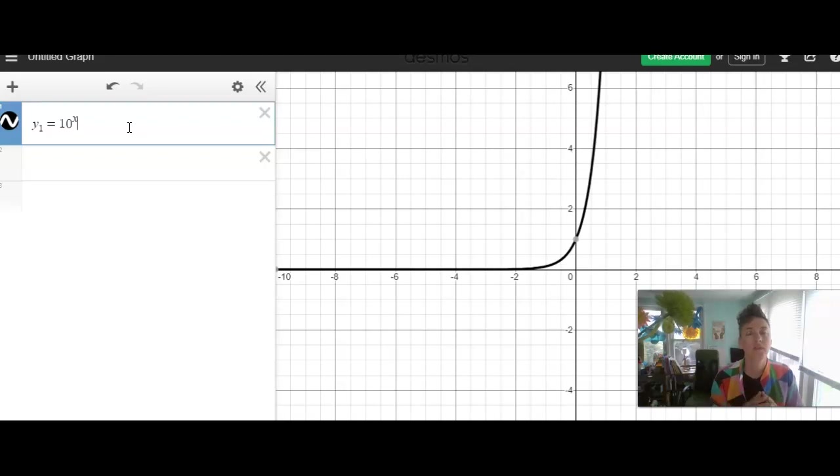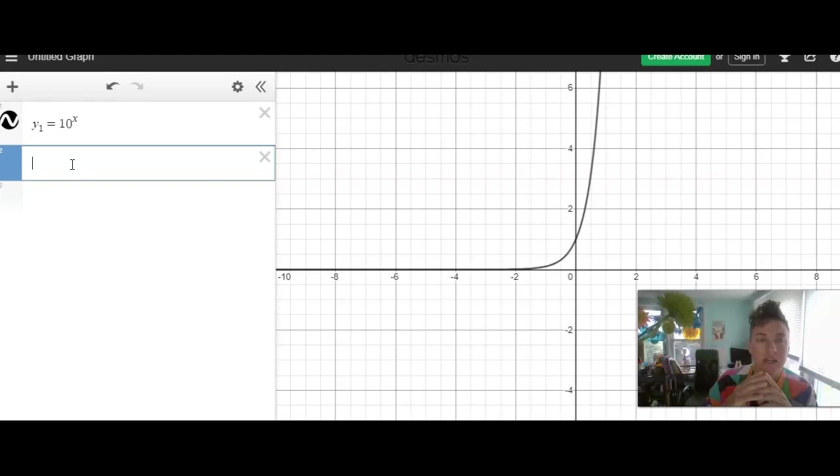Okay, now, what we found inverse functions before, remember we switched the x and the y, and then we solved for x, right? And then graphically, the inverse functions reflected off of, or were reflections across the line y equals x.